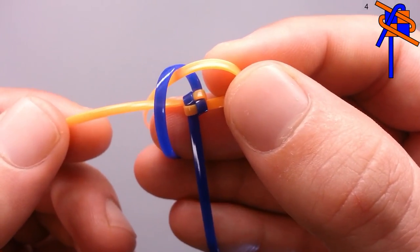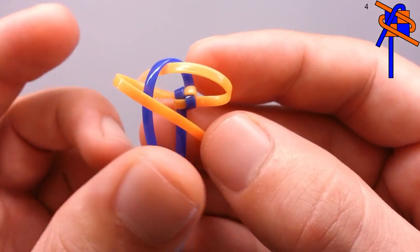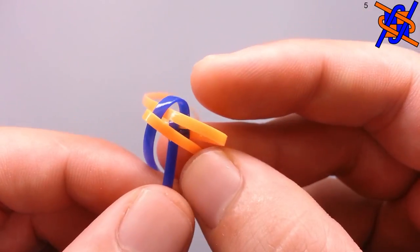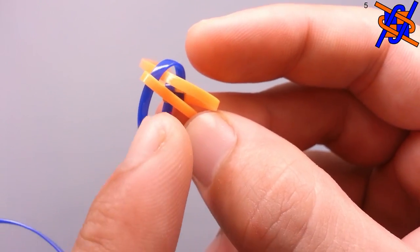Now taking the second orange string and cross it over the blue. Now taking the second blue string and weave over and under.